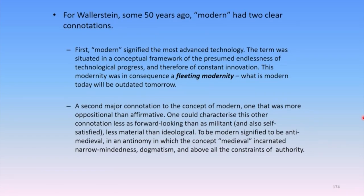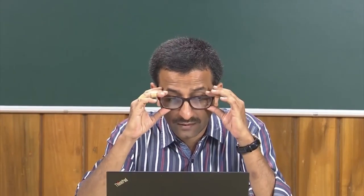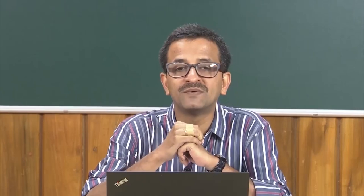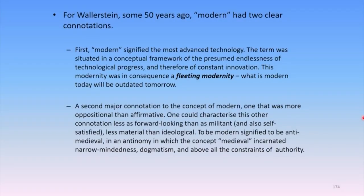For Wallerstein, the term 'modern' had two clear connotations. First, modern signified the most advanced technology — situated in a conceptual framework of the presumed endlessness of technological progress and therefore of constant innovation. This modernity was in consequence a fleeting modernity: what is modern today will be outdated tomorrow. What is technology today may not remain technology tomorrow.